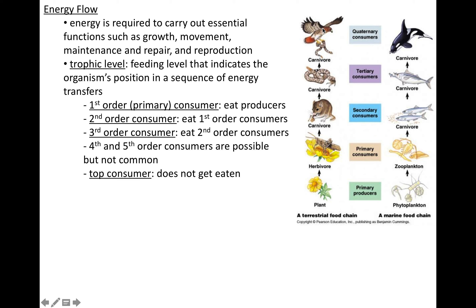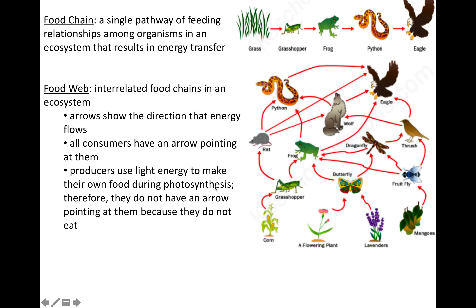If you had something that ate the fourth, it would be called the fifth. If you do not get eaten, you are the top of the food chain and you are a top consumer. The arrows show the flow of energy. The plant's energy goes to the herbivore — this grasshopper. The grasshopper's energy goes to this next small mammal. The small mammal gets eaten by the snake, and the snake's energy finally goes to this hawk. What I just showed you was technically a food chain.